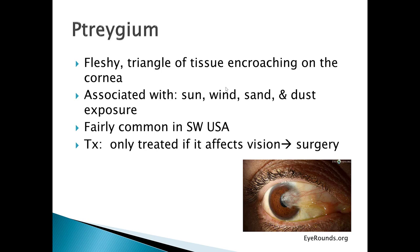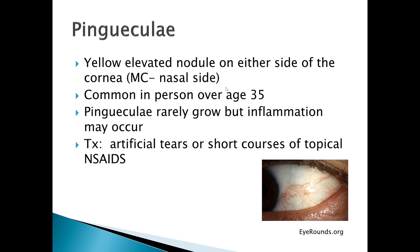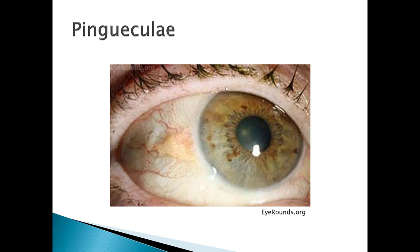Pinguecula is a yellow elevated nodule on either side of the cornea, most commonly seen on the nasal side. It's common in people over the age of 35. Pingueculas rarely grow but inflammation can occur, making them more red at times. They are very concerning to patients but are a benign condition. Treatment is artificial tears and a short course of topical NSAIDs. Here's a picture of a pinguecula — in this particular image it's on the temporal side of the eye.